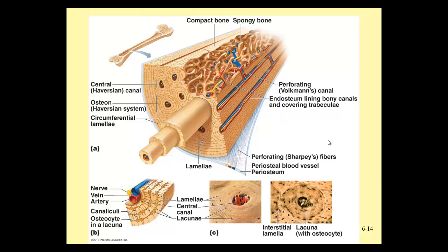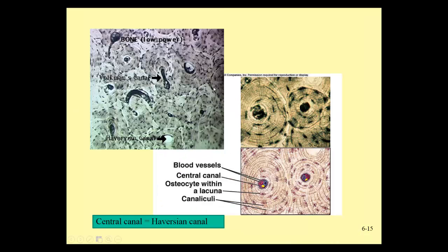Here's another tissue view showing a Volksman's canal connecting two osteons together. The canal running down the center of each osteon is the Haversian canal. Again, you can see the hazy canaliculi — the little extensions coming off the osteocytes — that help those cells communicate with one another in this hardened bone matrix.